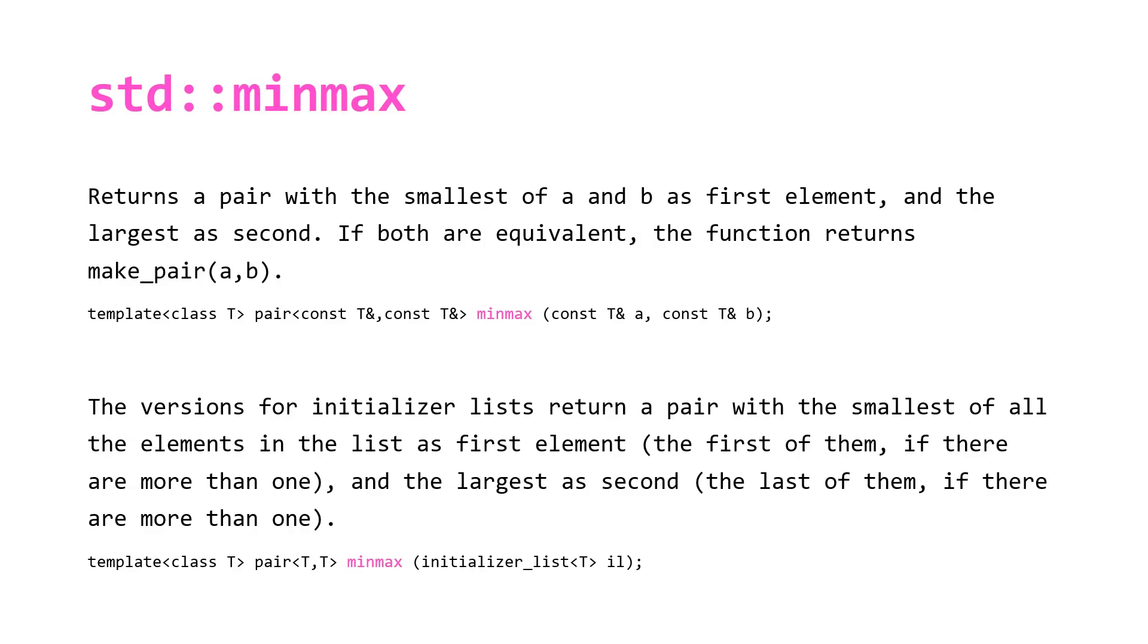std::minmax has the same behavior but returns not just one value but a pair of values that represent the smallest and largest elements.